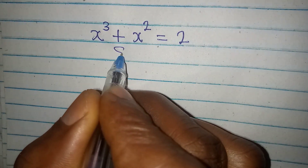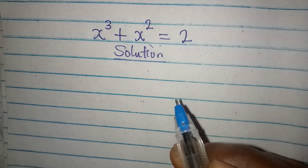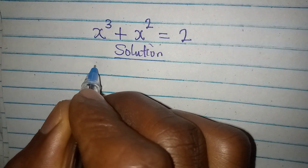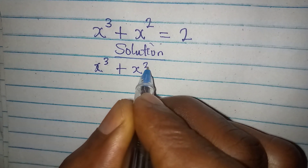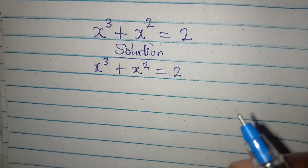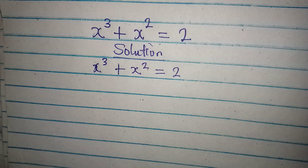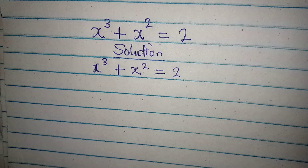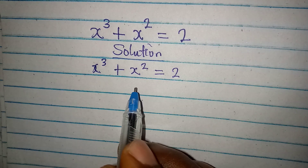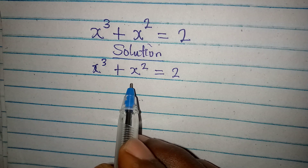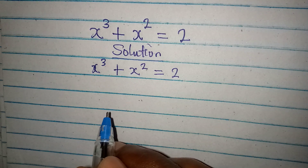Hello everyone, let us provide the solution to this problem. We have x to the power of 3 plus x to the power of 2 equal to 2. By looking at this problem, you can easily tell what the answer will be. But whatever answer you are going to tell will be a real solution. We are going to get the complete solution to this problem. Now let's begin.